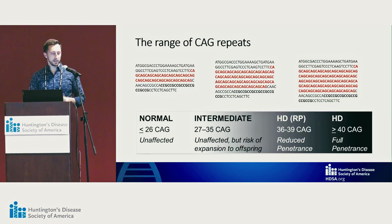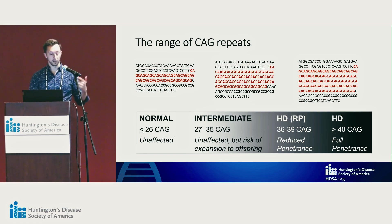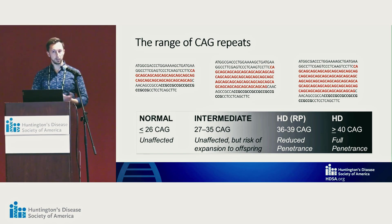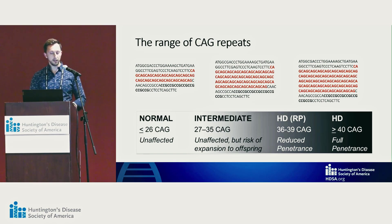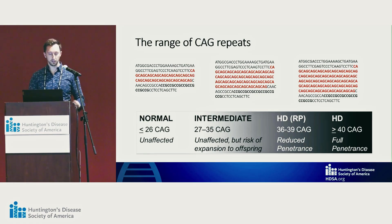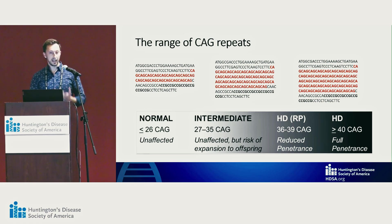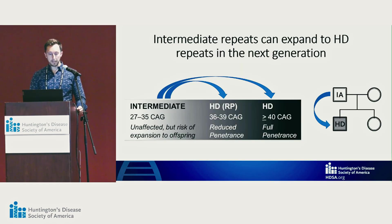Here is the range of CAG repeats: 26 or less is called a normal repeat. 27 to 35 is called an intermediate allele — it won't cause HD itself but can expand in your children. Then you have two categories of HD repeats. The first is called reduced penetrance: 36 to 39 repeats, meaning you may or may not get HD. Then 40 and above, which we call full penetrance, meaning it's highly likely — almost certain — you will get HD.